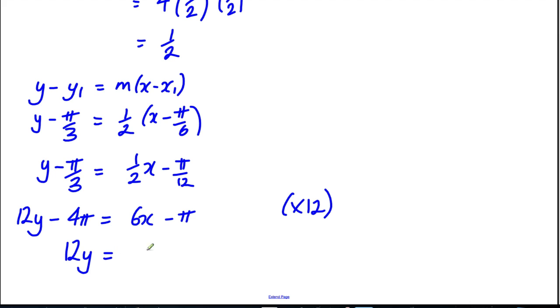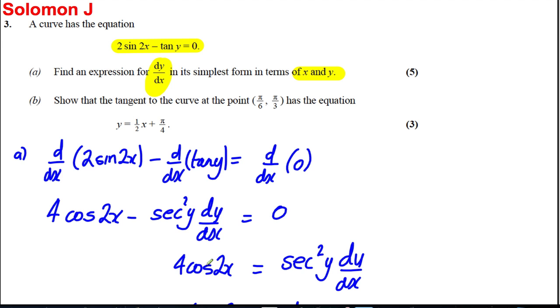So 12y is equal to 6x, adding 4π to both sides would be plus 3π. And dividing by 12, y is equal to 6x over 12 which is a half x plus 3 divided by 12 which is a quarter π. And that's exactly as wanted in the question, so we're done.